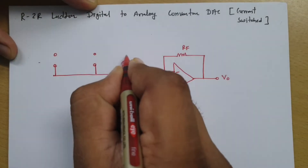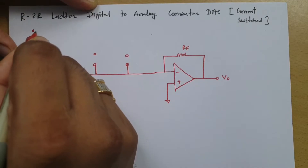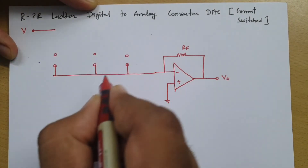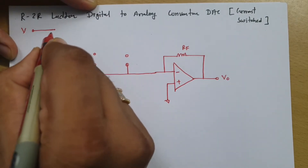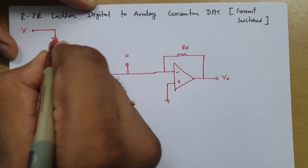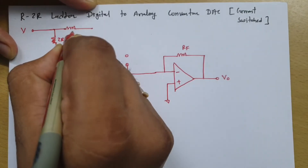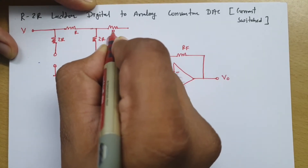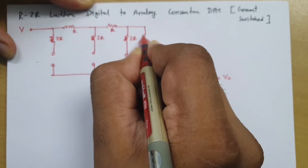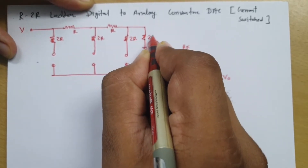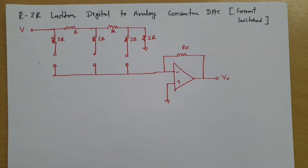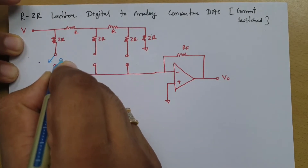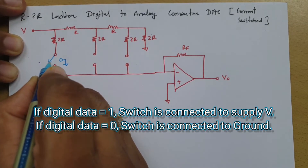We'll be connecting a current switched network. Here, switching is happening with respect to current. I'll be making this circuit for a 3-bit digital-to-analog converter, so we have three switches. Along with the switches, we have an input voltage V. We'll be connecting an R2R ladder network — in parallel we'll connect a 2R resistor, and in series an R resistor. One more 2R resistor is connected in parallel and grounded. The digital data is applied by switch: if the switch is on, it connects to the network; if off, it is grounded.